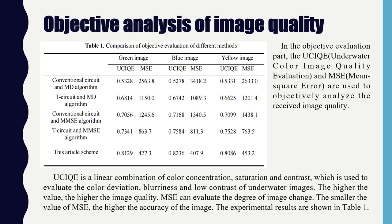In the objective evaluation part, the UCIQE (Underwater Color Image Quality Evaluation) and MSE (Mean Square Error) are used to objectively analyze the received image quality. UCIQE is a linear combination of color density, saturation, and contrast, which is used to evaluate the color deviation, blurriness, and low contrast of underwater imaging. The higher the value, the higher the imaging quality. MSE can evaluate the degree of image change. The smaller the value of MSE, the higher the accuracy of the image. The experimental results are shown in the table.